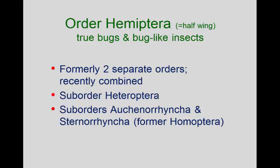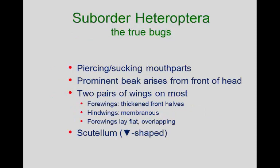There are actually three suborders of this. You don't need to remember these technical names — I can't even pronounce the Auchenorrhyncha and Sternorrhyncha well myself. But those are the bug-like insects that include the cicadas, the aphids, the hoppers — those we saw in laboratory. They used to be combined in one order, the Homoptera. All of these have piercing, sucking mouthparts.